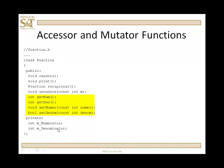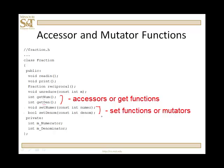We've added some functions to the class. We've added getNum, getDen, setNumer, and setDenum. So, this is going to return the numerator. This is going to return the denominator. So, those are accessor functions. These are accessors, or get functions. And these are set functions, or mutators.